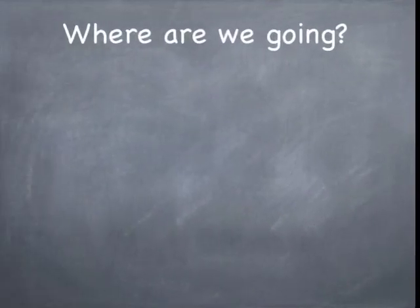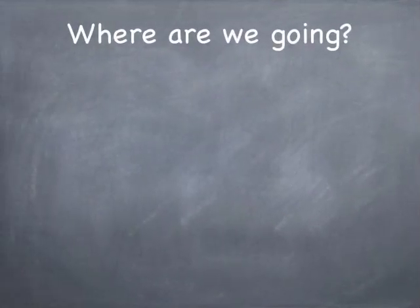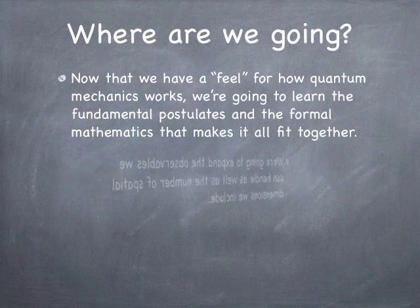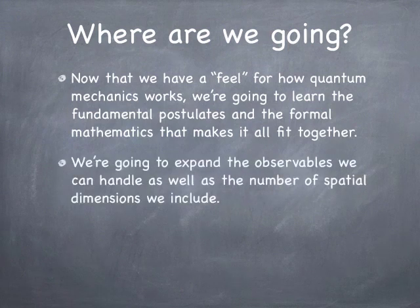Next, we want to talk about where are we going to go. So now that we have a feel for how this stuff works, we're going to learn the fundamental postulates. So this lesson is primarily about the fundamental postulates and the beginning of working with that formalism. We're going to expand the observables we can handle. We're going to talk about angular momentum, spin, and so on. That all comes in Chapter 4, but we're going to get ready for the expansion of the number of observables by talking about how the postulates deal with observables and how they show up in the formal theory of quantum mechanics.